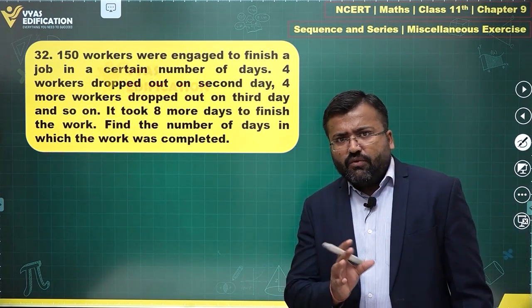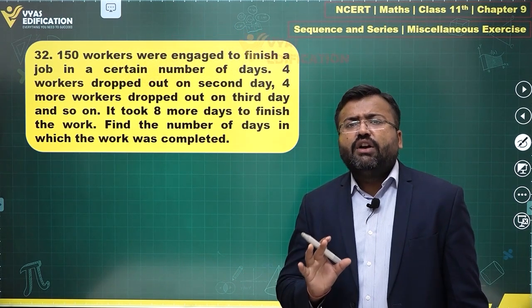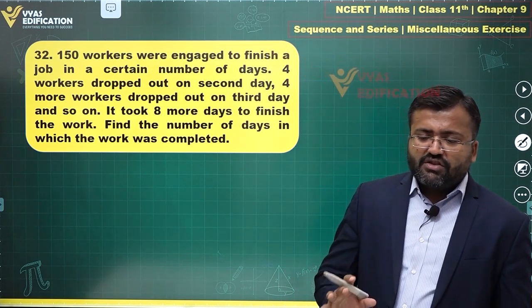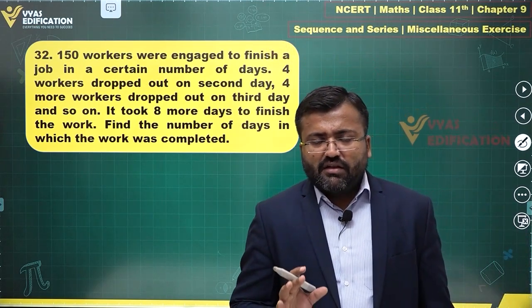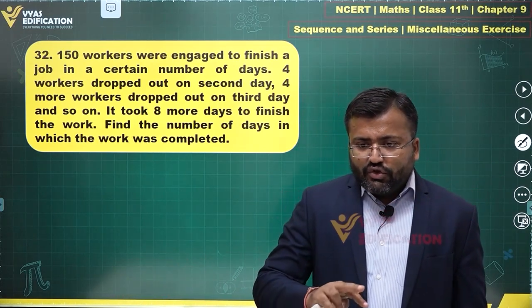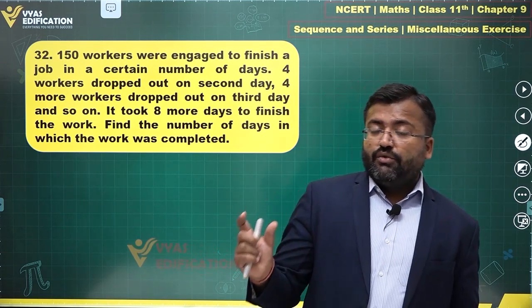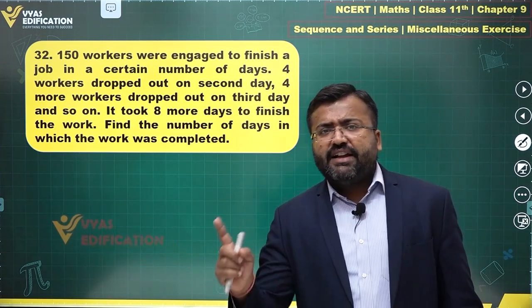So this is related to some work and some people involved in doing the work. If you observe, how are the calculations being done over here? So if there are 150 workers assigned to a particular task, they work for some, let's say, 10 days. So total number of man days can be counted. 150 workers into 10 days will be 1,500 man days of work.